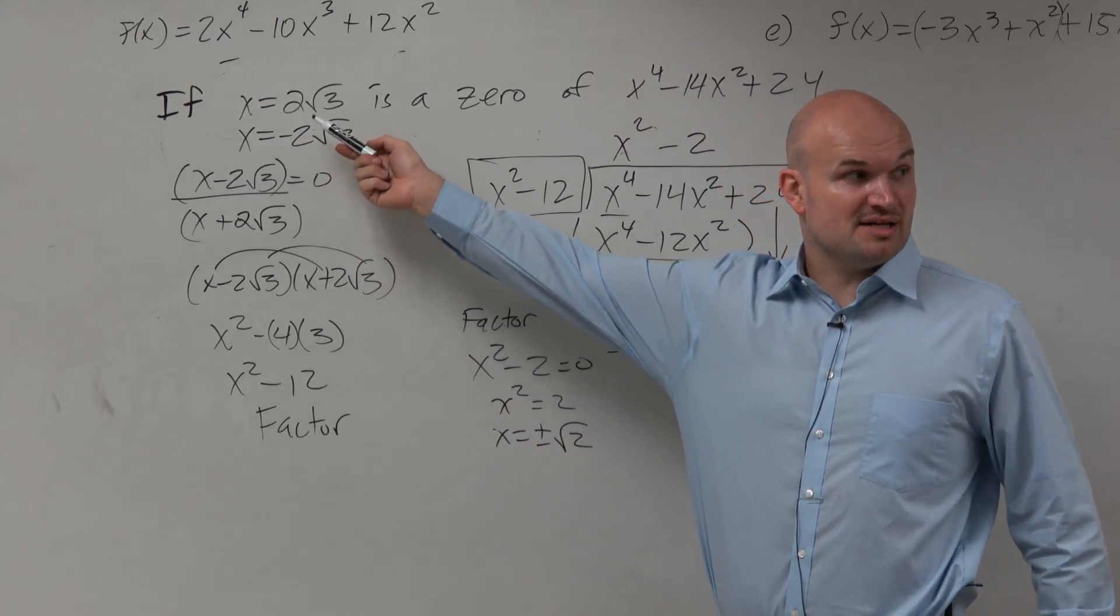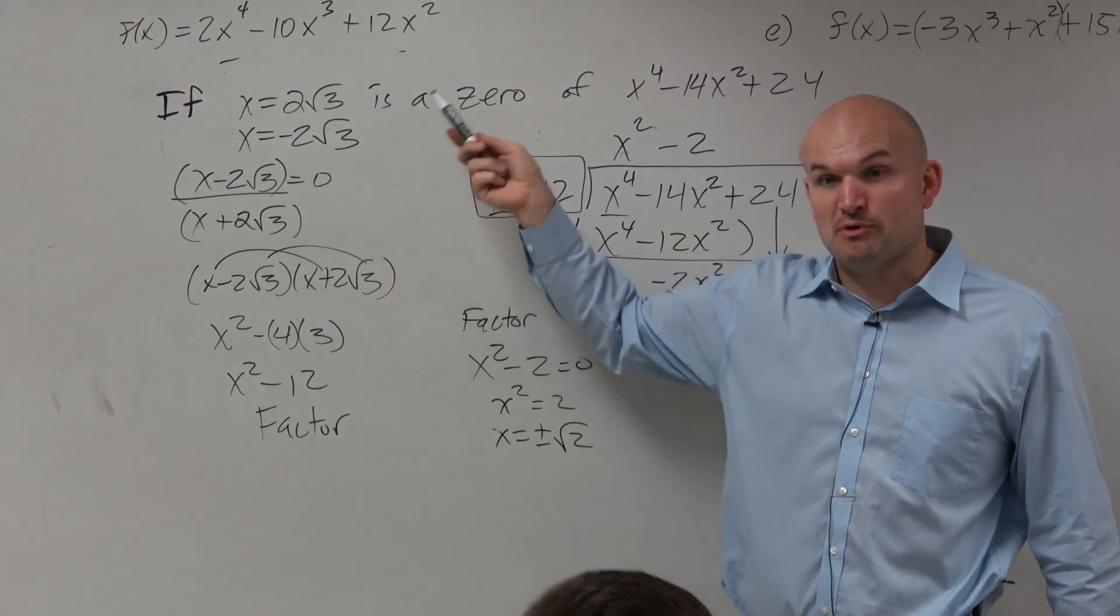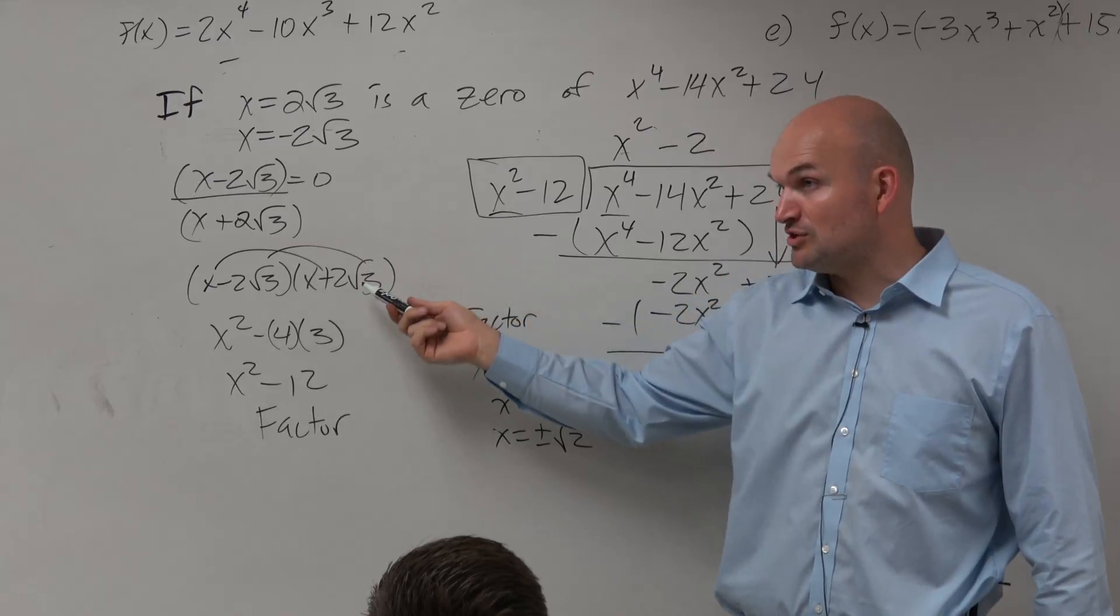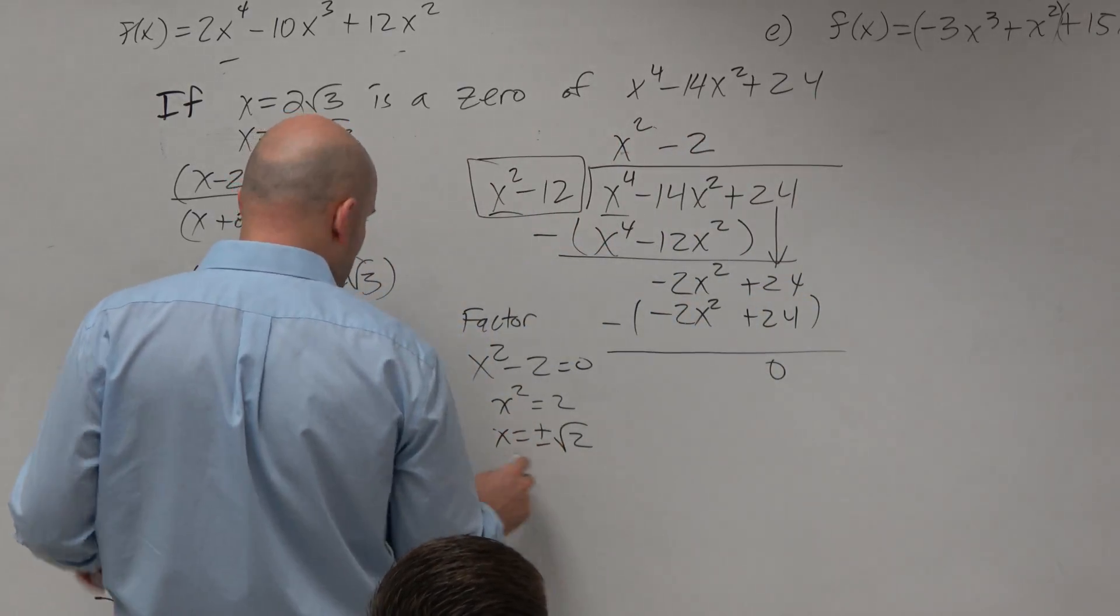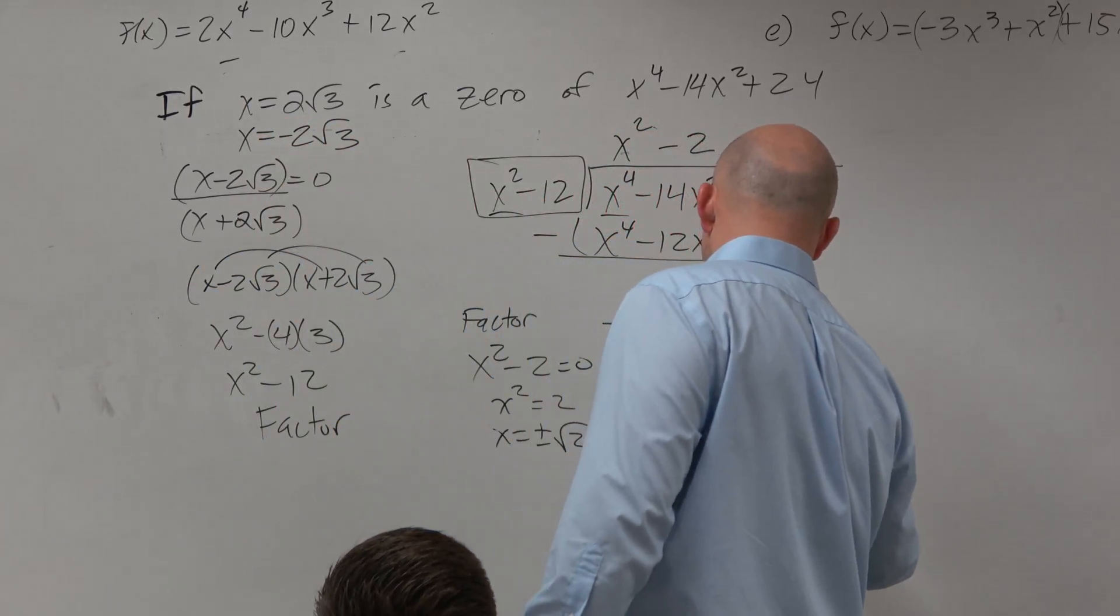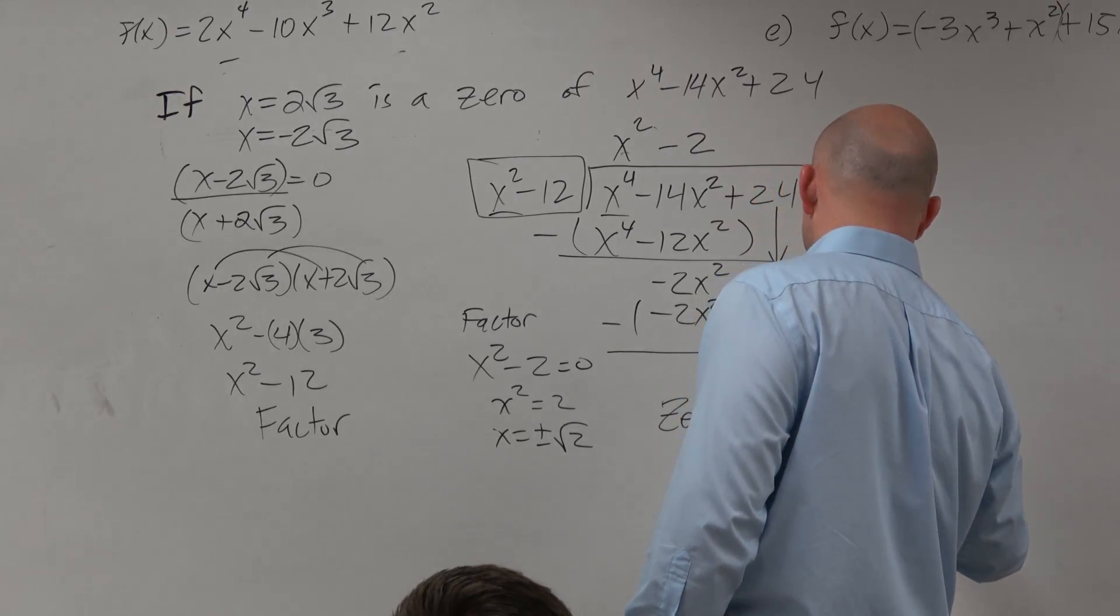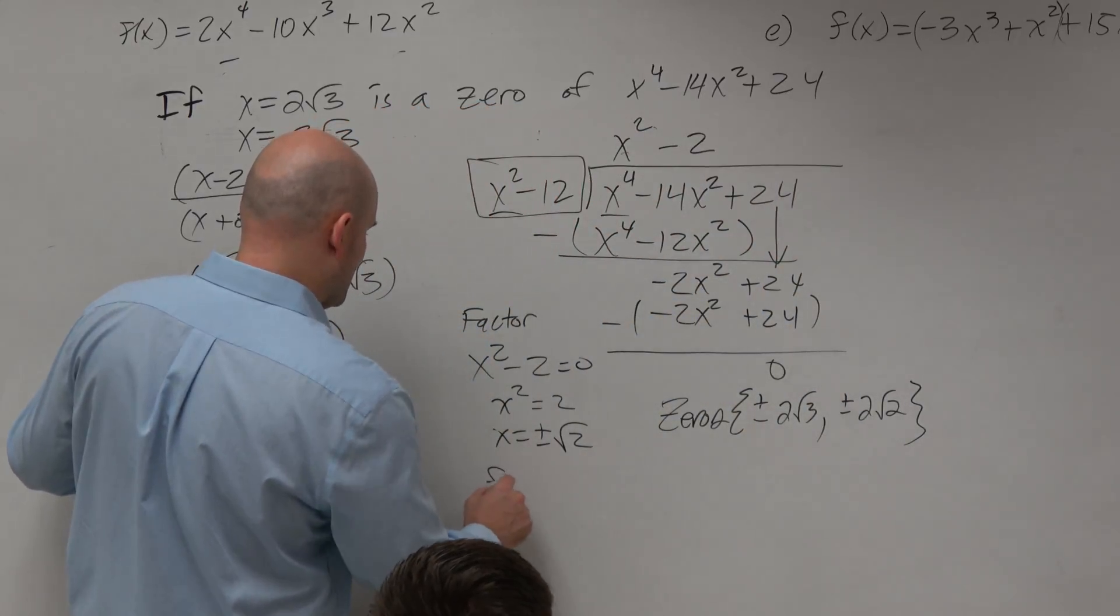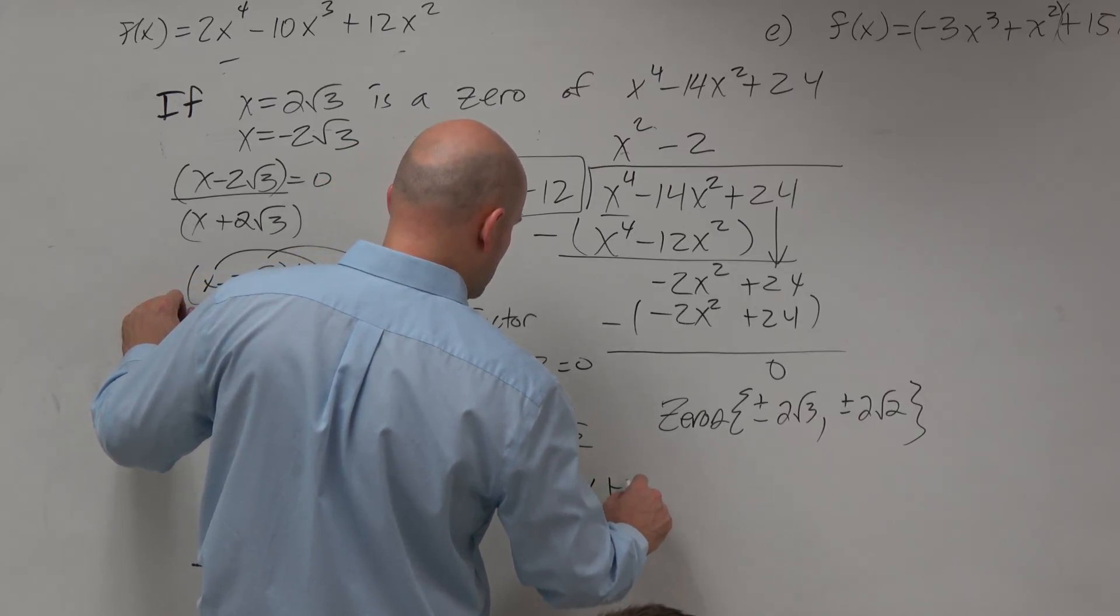So what are the zeros? One zero was given to us. Was the other zero really easy to find? Yeah. Could you do synthetic division with both of them to find the other ones? Fine. Could you also write them as factors and then multiply them and then find the other zero? Yes. So those are your zeros. You could say the zeros are ±2√3 and ±√2. And if I asked you to find the linear factorization, now this one's not as bad, so I would expect you could be able to do this.